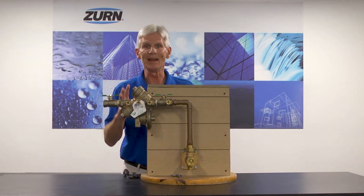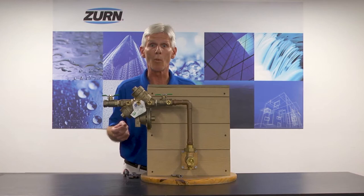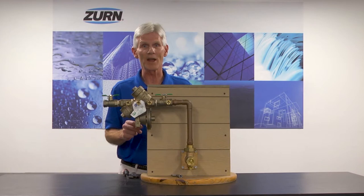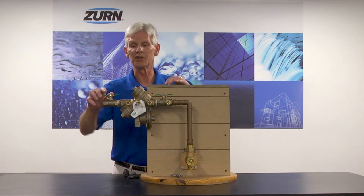Before we get started, any time that you're going to shut the water off to a building, always let the end user know that you are going to shut that water off. We could have processes going on inside the building that could cause tremendous problems if we just simply shut the water off. So we've gone to the end user, we found that we do have permission to go ahead and shut the water down to the building, and we're going to show you how to clean this number one check.